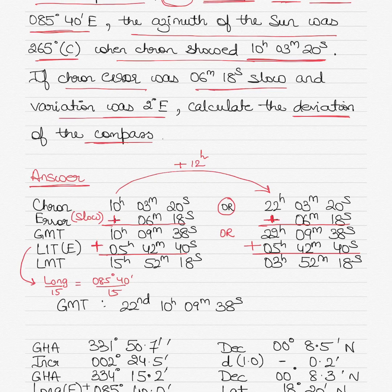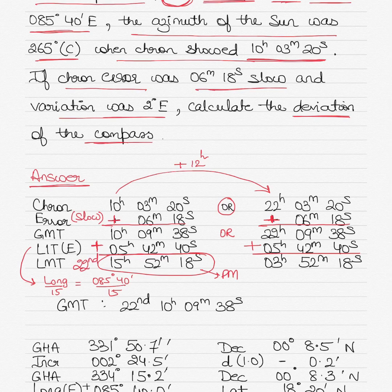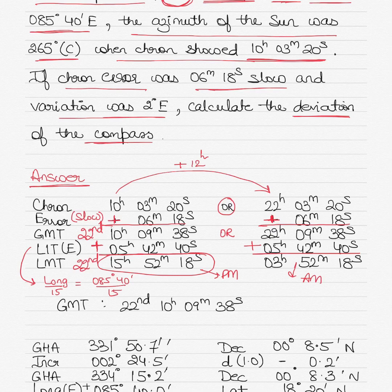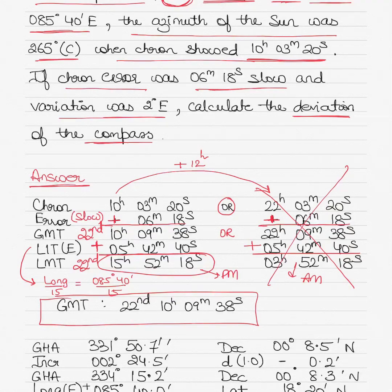The hint in the question is that it's p.m. on the ship — it's evening. Of the two LMT scenarios, only the first (15:52:18) is evening on 22nd September. The second (03:52:18) is 3 in the morning, so we cancel that out. Therefore, our correct GMT is 22nd September, 10 hours 09 minutes 38 seconds.